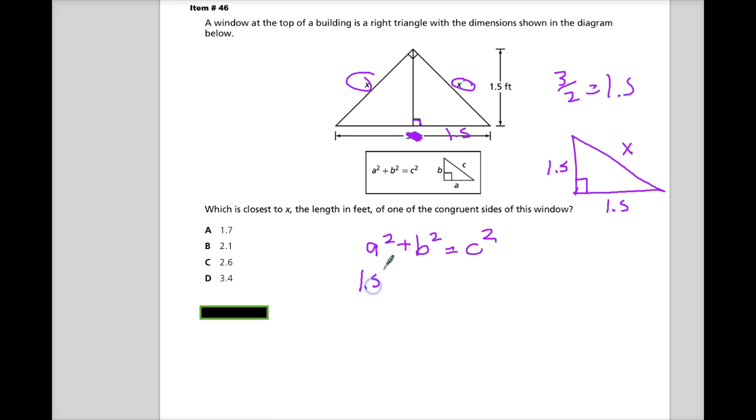So 1.5 squared. You'll notice, by the way, that the two numbers that we're given make up the sides that make up the right angle. So that would be A and B. Plus 1.5 squared equals C squared. At one point I always said to touch the right angle, which is a good strategy because it tells you what A and B are.